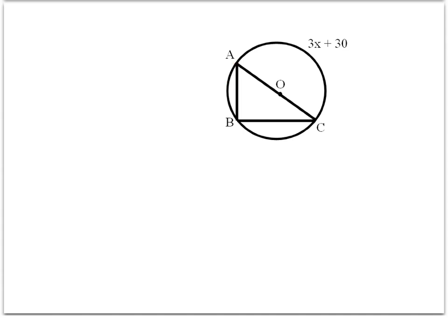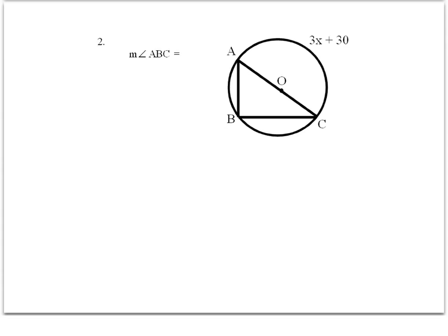There's a theorem that states if an inscribed angle of a triangle intercepts a semicircle, the angle is a right angle. All that means is that if you have a triangle inscribed in a circle and one of the sides goes through the diameter, this is always going to be a right triangle, no matter where the third point is on the circle. So we put our right angle mark in there, and we know angle ABC is 90 degrees.